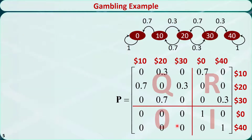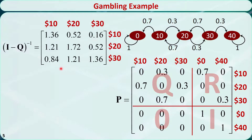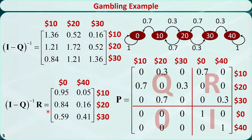Now let's calculate the fundamental matrix. Note that this identity matrix is of the same size as Q, that means it is a 3 by 3 identity matrix, which is different from this one. The ij's elements in this matrix represent the expected number of periods that we will spend in transient state j before being absorbed if we are currently in transient state i. Now let's calculate the fundamental matrix times R. The ij's element in this matrix represents the probability that we will eventually be absorbed in absorbing state j if we are currently in transient state i.